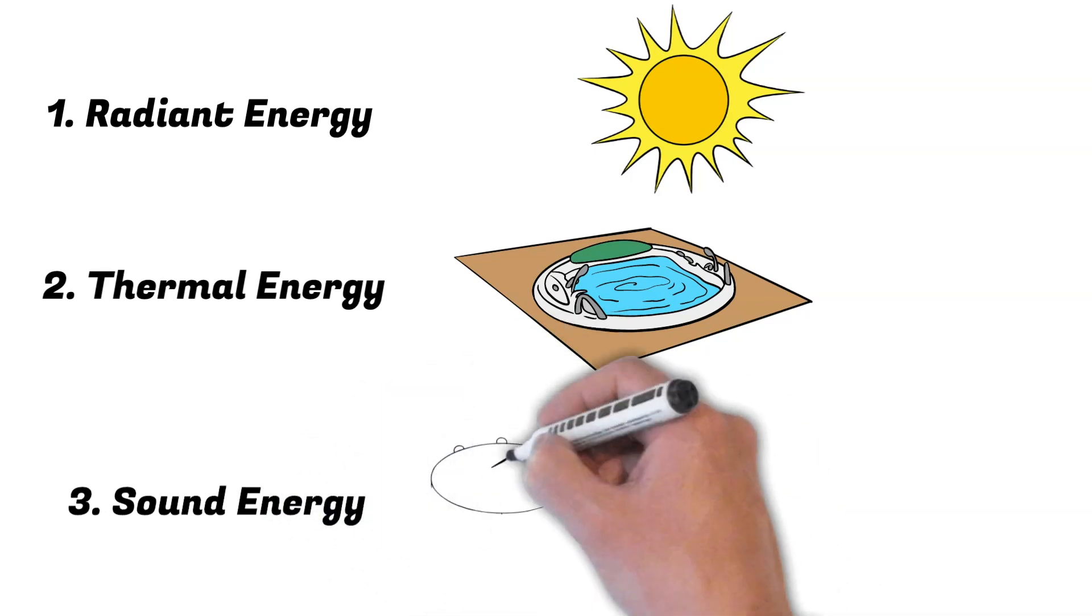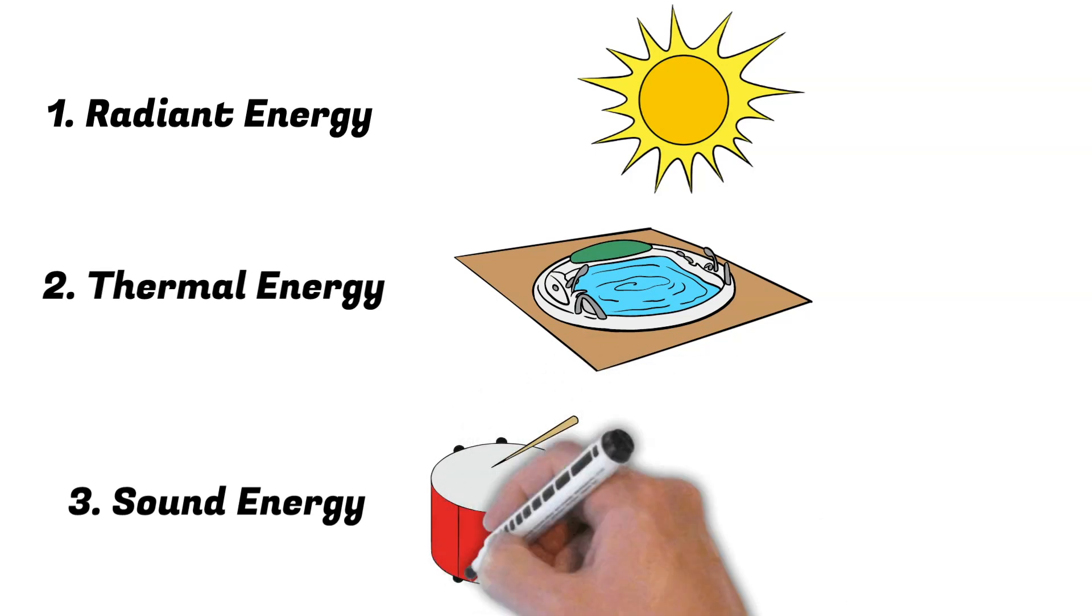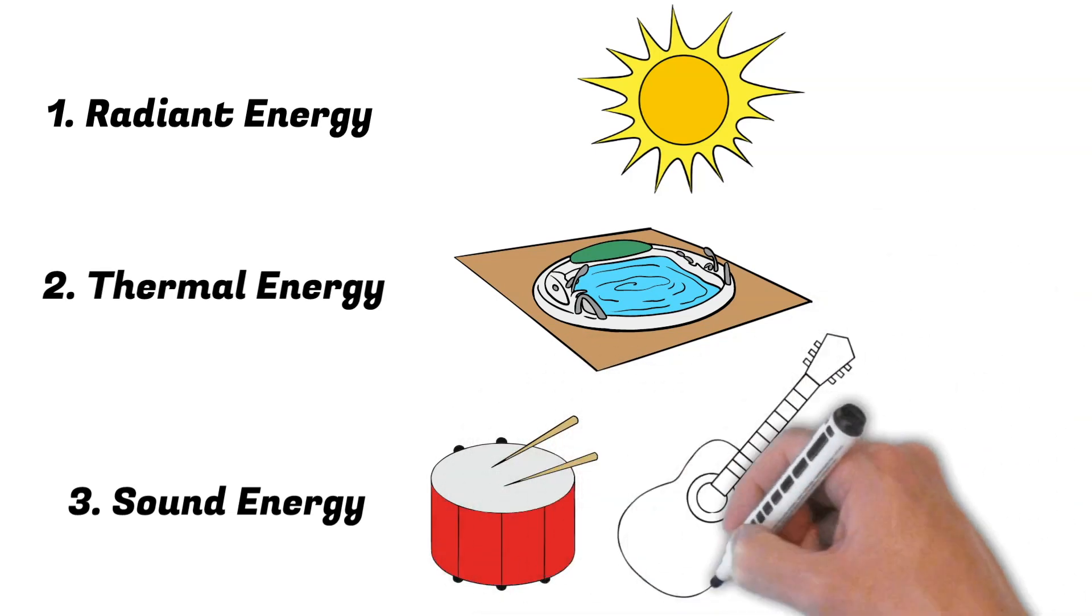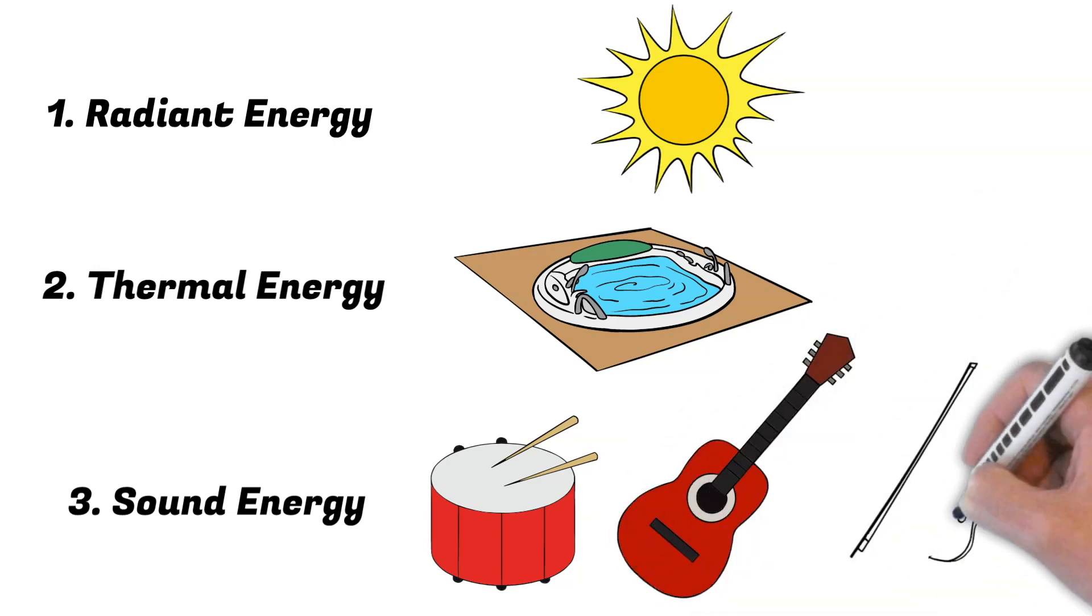The vibration of an object is what produces this sound energy. An example of this is drums or the string of an instrument like a guitar or violin. And then that brings us to electrical energy.